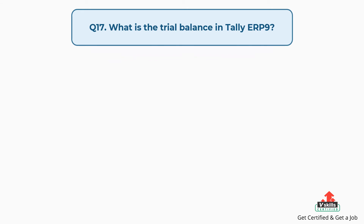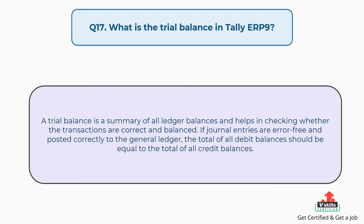Question number seventeen: what is the trial balance in Tally ERP9? A trial balance is a summary of all ledger balances and helps in checking whether the transactions are correct and balanced. If journal entries are error-free and posted correctly to the general ledger, the total of all debit balances should be equal to the total of all credit balances.